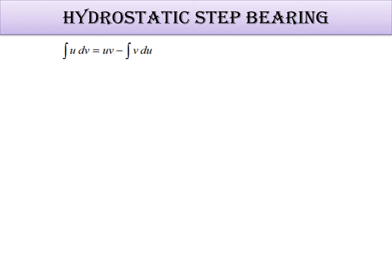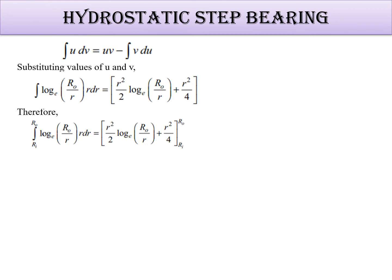So integration of u dv is equal to uv minus integration of v du. Substituting these values of u and v, log to the base e Ro by r, r dr is equal to r² by 2 log to the base e Ro by small r plus r² by 4. So therefore this equation becomes in this way.